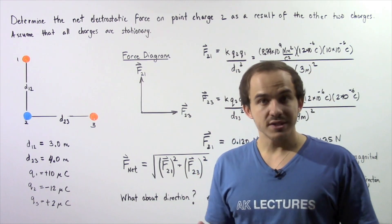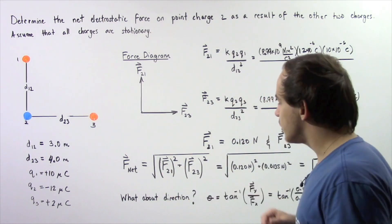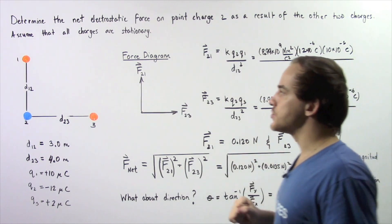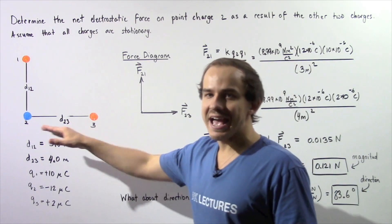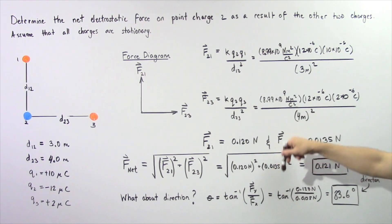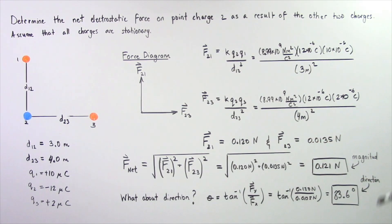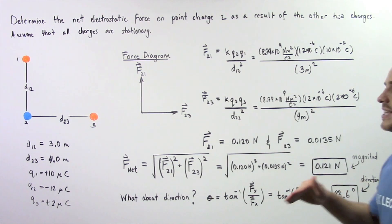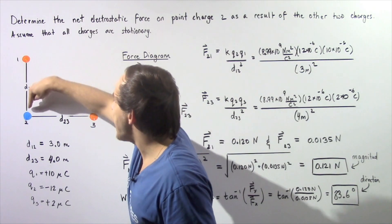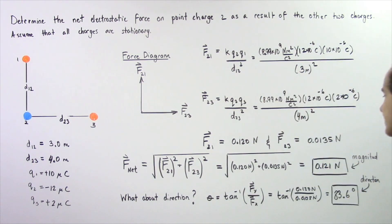Now what about direction? Forces have both direction and magnitude. To find the direction, we take the inverse tangent of the y-axis force divided by the x-axis force. The y-component force is 0.120 newtons and the x-component is 0.0135 newtons. The inverse tangent of 0.120 divided by 0.0135 gives approximately 83.6 degrees. This angle is measured with respect to the x-axis, and the magnitude of the net electrostatic force is 0.121 newtons.